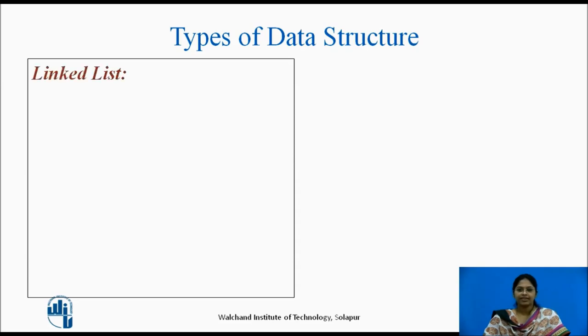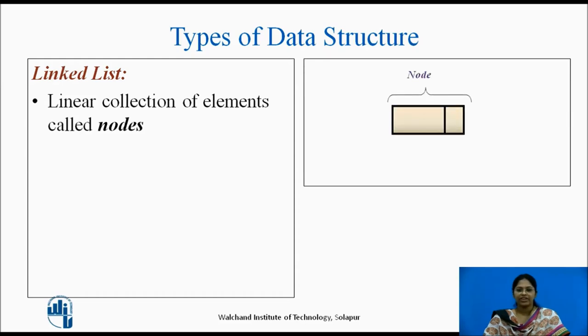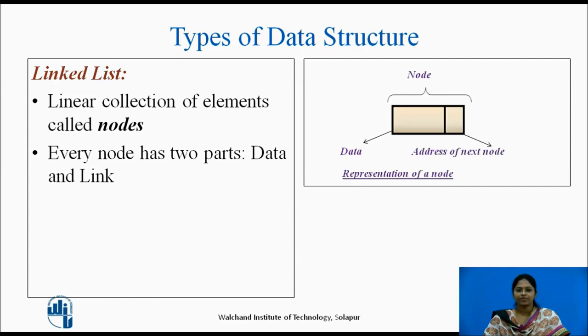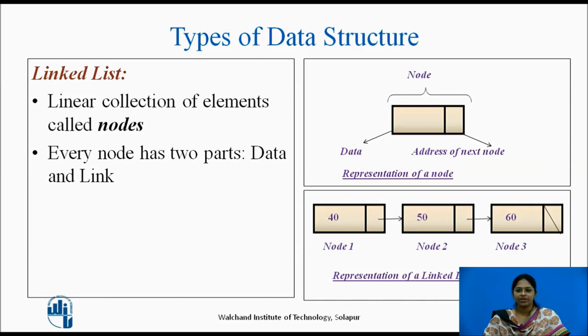Next is the linked list. In real time systems, most often the number of elements will not be known in advance. The major drawback of an array is that the number of elements must be known in advance. Hence, an alternative approach was required. This gives rise to the concept called linked list. A linear list is a linear collection of data elements called nodes. Every node has two parts. The first part contains the data part and the second part contains the address of the next node. Memory is allocated for every node when it is actually required and will be freed when not needed. So, a general representation of a linked list is shown here.